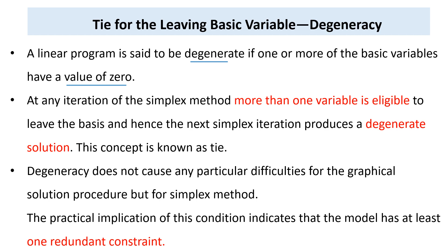At any iteration of the simplex method, if more than one variable is eligible to leave — that is, the minimum ratios are equal — then the next simplex iteration produces a degenerate solution. Degeneracy does not cause particular difficulties when solving by the graphical method, but we may encounter a problem using the simplex method. One such problem is cycling, which means we get repeated simplex tables with the same objective function value without improving it.